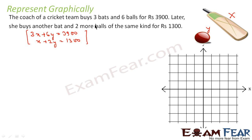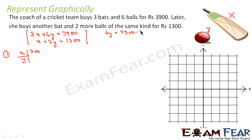To derive the equations, we assumed the cost of a bag is x and the cost of a ball is y, and then we read the problem and got the equations. Now let's find values of x and y. For equation 1, if x = 300, then 3x = 900, so 6y = 3900 − 900 = 3000, giving y = 500. So the first point is (300, 500).